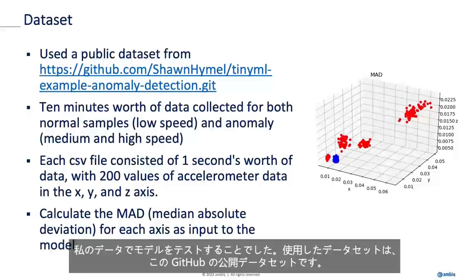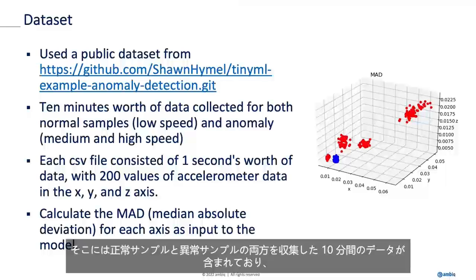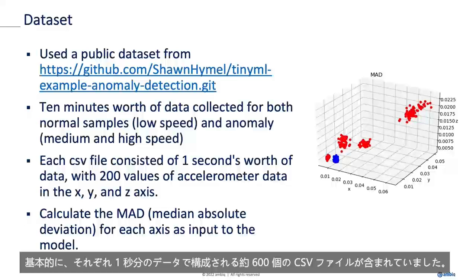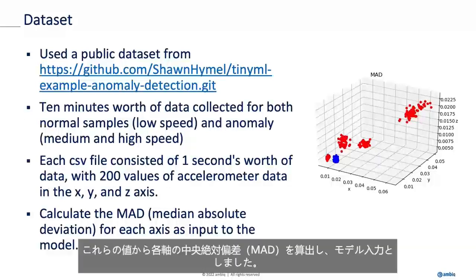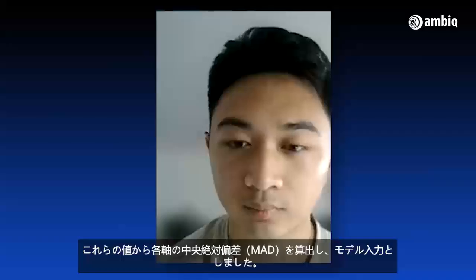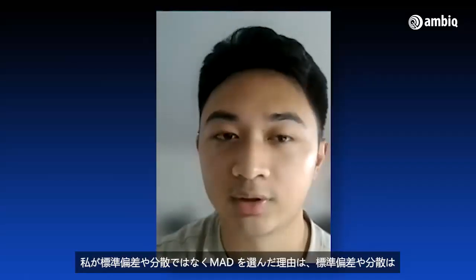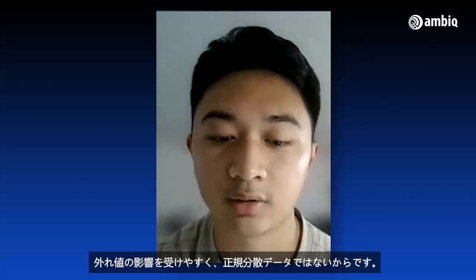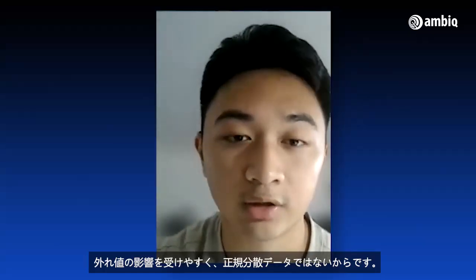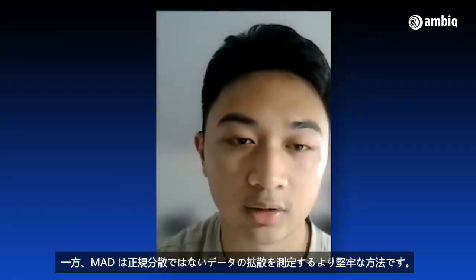The dataset I used was a public dataset from GitHub. It contained 10 minutes worth of data collected for both normal samples and anomaly samples — around 600 CSV files, each consisting of one second's worth of data. Each CSV file had a 200-by-3 array of floats containing accelerometer data on the X, Y, and Z axes. I calculated the MAD, or median absolute deviation, for each axis as inputs to the model. I chose MAD rather than standard deviation or variance because those are more susceptible to being affected by outliers and non-normally distributed data, whereas MAD is a more robust way of measuring the spread of non-normally distributed data.